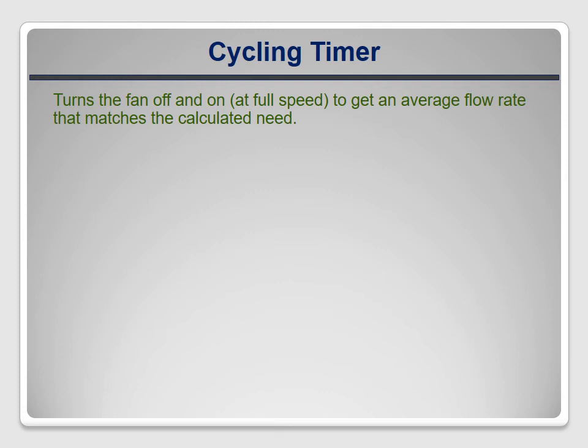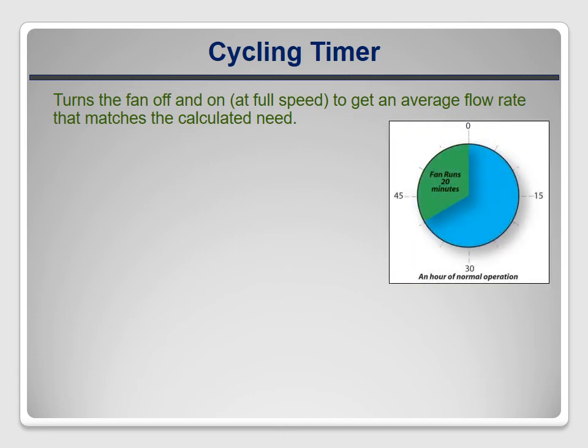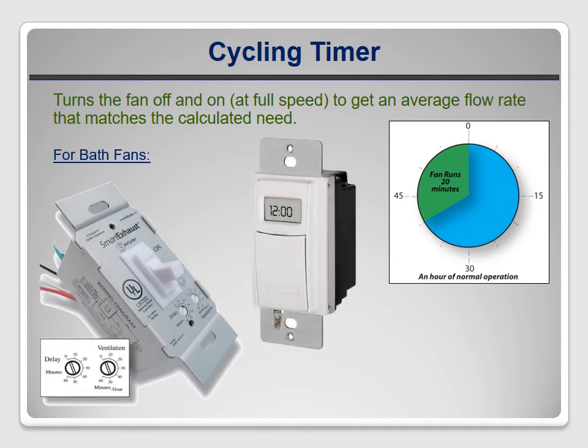All of the other external controllers I've seen run the fan at full speed, but cycle it off and on, usually for an adjustable number of minutes every hour. If you need 30 CFM but the fan runs at 90, then it only needs to run a third of the time, or 20 minutes every hour. Here are two examples. The smart exhaust is nice because the settings consist of only two dials — one is for the minutes per hour of runtime, and the other is for the high-speed runtime when the bathroom is used. I installed this one in my last house, and it worked great. The other one allows day-by-day programming and is often available at big-box home stores, but like programmable thermostats, it can be challenging for occupants to use.